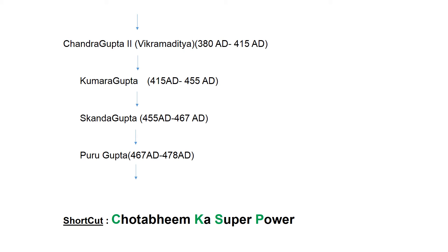After Samudra Gupta, Chandragupta II ruled the Gupta dynasty. He is also called Vikramaditya and ruled between 380 AD and 415 AD. After him, Kumar Gupta ruled between 415 AD and 455 AD. Then Skanda Gupta ruled between 455 AD and 467 AD, followed by Purugupta who ruled between 467 AD and 478 AD. To remember these four rulers, the shortcut is 'Chota Bhim ka Superpower' — C for Chandragupta II, K for Kumar Gupta, S for Skanda Gupta, and P for Purugupta.